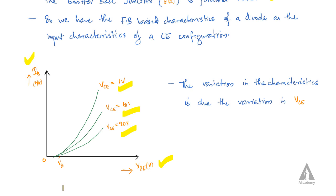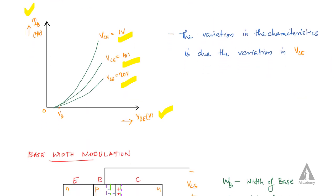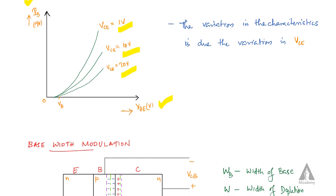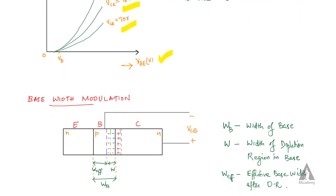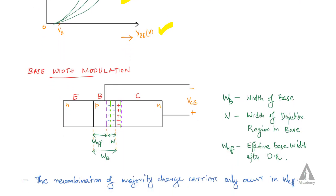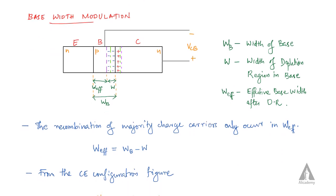For silicon the threshold voltage is 0.7 volts and for germanium it is 0.3 volts — similar to the forward characteristics of a diode.